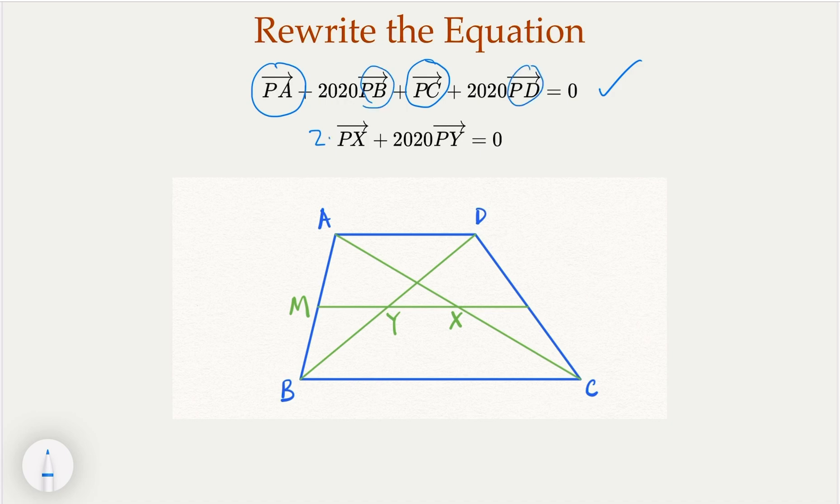And two cancels. So originally we have a two factor here, but we cancel. So we have this. So what is the meaning of this? Let's think about it. What this says is PX as a vector is equal to negative 2020 PY.